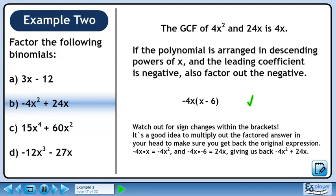Watch out for sign changes within the brackets. It's a good idea to multiply out the factored answer in your head to make sure you get back the original expression. Minus 4x times x is minus 4x squared, and minus 4x times minus 6 is 24x. This gives us back minus 4x squared plus 24x.